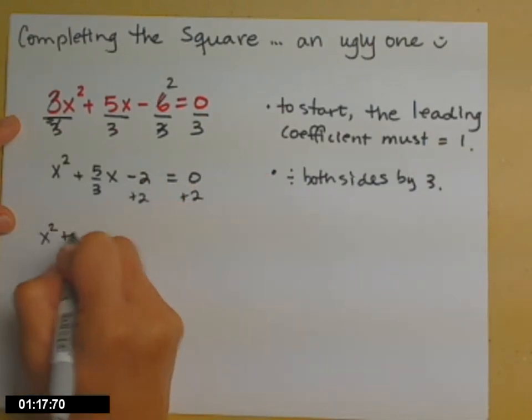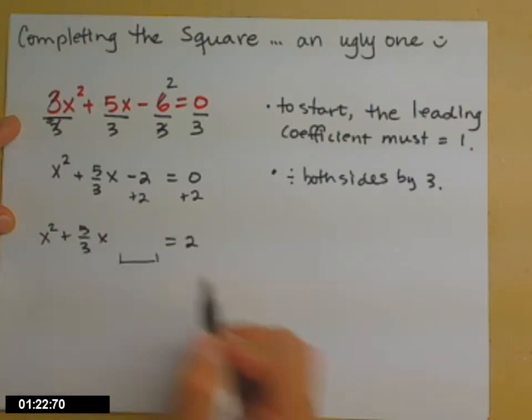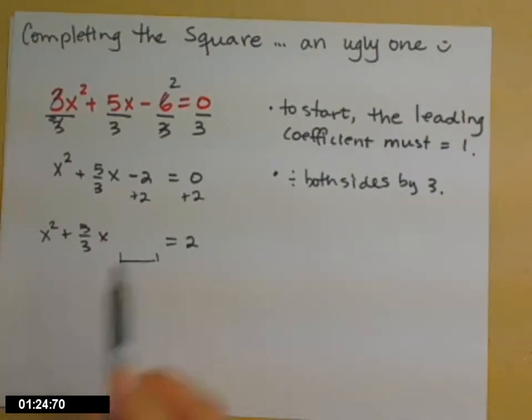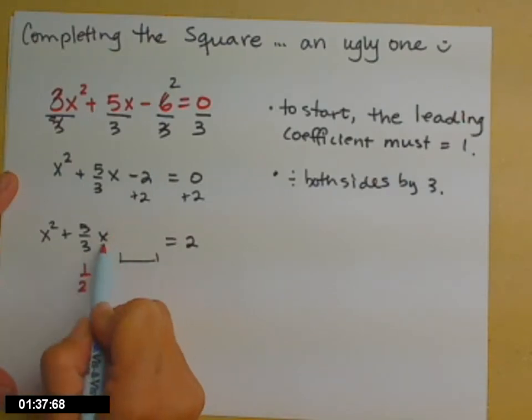So in this space that we've left, I need to put the correct constant term so that I will get a perfect square trinomial on the left-hand side. So what that constant term is, is half of the linear term, so here's my linear term because it's x to the first, half of the linear coefficient squared.